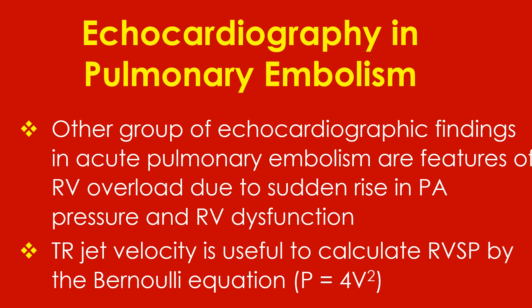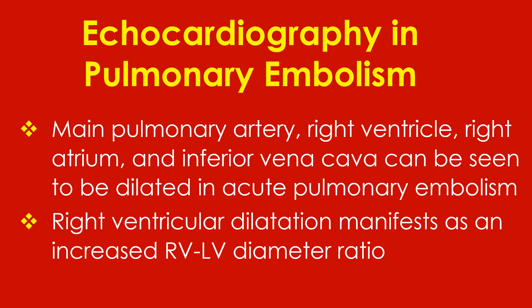Tricuspid regurgitation jet velocity is useful to calculate the right ventricular systolic pressure by the Bernoulli equation P equals 4V squared. The main pulmonary artery, right ventricle, right atrium, and inferior vena cava can be seen to be dilated in acute pulmonary embolism.